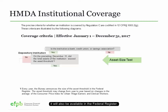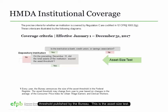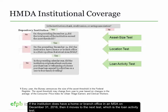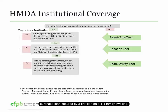Let's review each of these tests. The depository institution would first determine whether its assets on December 31, 2016 exceed the asset threshold published by the Bureau — this is the asset size test. If the institution's assets exceed the threshold, then it would move to the location test. The institution would need to determine whether it has a home or branch office in a metropolitan statistical area known as an MSA as of December 31, 2016. If it does, then it moves to the loan activity test, where an institution would look at its lending activity in 2016 and see if it originated at least one home purchase loan or a refinancing of a home purchase loan secured by a first lien on a 1-4 family dwelling.